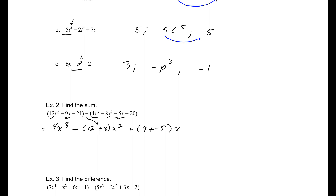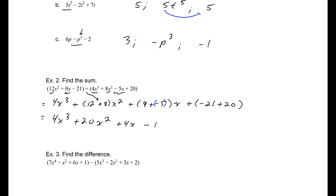That is these two terms right here, 9 plus negative 5, x. And then we have plus, negative minus 21, plus 20. So, 4x cubed, plus 20x squared, plus 4x, minus 1. And there we have it. Everything has a different exponent here. We have different powers for each of those. That is as complete as we're going to get.